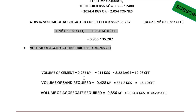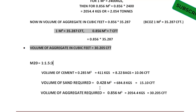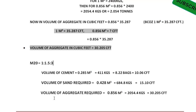Quick recap for M20 grade of concrete with ratio 1:1.5:3. Volume of cement: 0.285 cubic meters, 411 kg, 8.22 bags, 10.06 cft. Volume of sand required: 0.428 cubic meters, 684.8 kg, 15.10 cft. Volume of aggregate required: 0.856 cubic meters, 2054.4 kg, 30.205 cft.